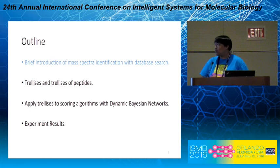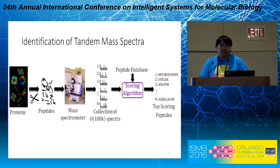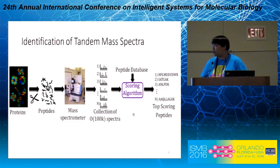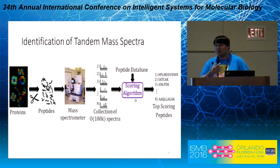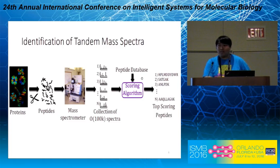Let's start with the mass spectra identification problem. Generally, we are given a set of unknown proteins which get digested into a set of peptide sequences, and through the mass spectrometer machine we get a large collection of observed spectra. For each observed spectrum, we have a scoring algorithm which looks into a certain peptide database and assigns scores to a set of peptides, so that the top-scored peptide is reported as the peptide responsible for generating that observed spectrum. Our focus will be on this last step.